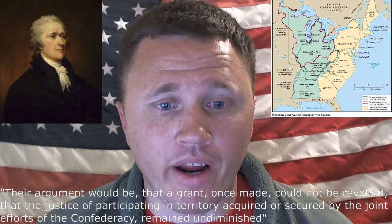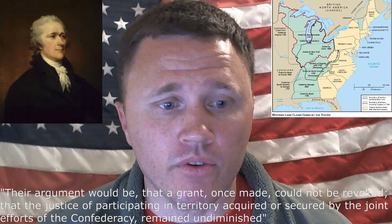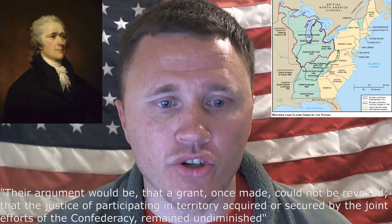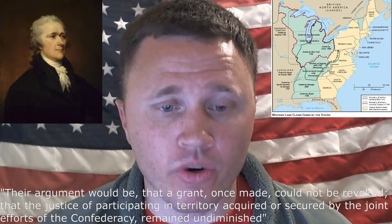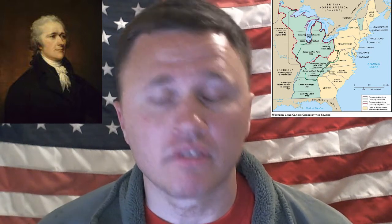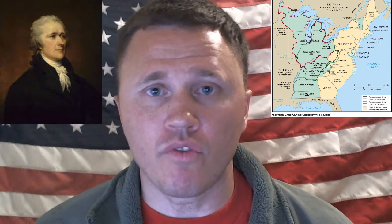Hamilton notes, quoting: 'Their argument would be that a grant once made could not be revoked, that the justice in participating in territory acquired or secured by the joint efforts of the Confederacy remain undiminished.' Even conceding the mutual rights of all states to this vast tract of land — meaning the Western territories — the concern for Congress then changes to a brand new obstacle: that of apportionment, or how to divide up this land.